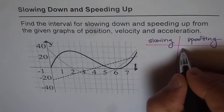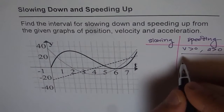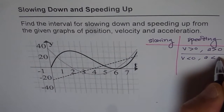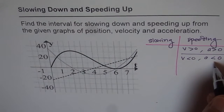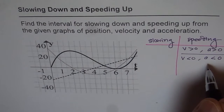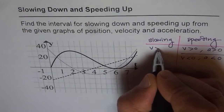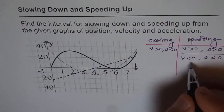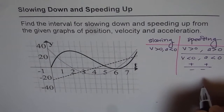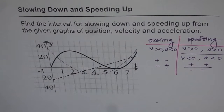For speeding up, the condition is: if velocity is greater than zero, then acceleration is also greater than zero — same direction. Or if velocity is less than zero, then acceleration is also less than zero — speeding up in the negative direction. For slowing down, velocity and acceleration are in opposite directions: if velocity is greater than zero, then acceleration should be less than zero. Speeding up is positive-positive or negative-negative; slowing down is positive-negative or negative-positive between velocity and acceleration.